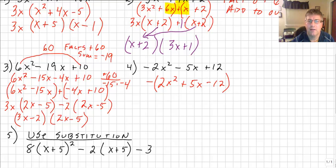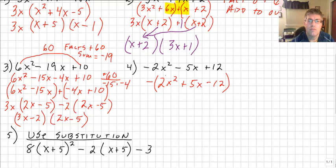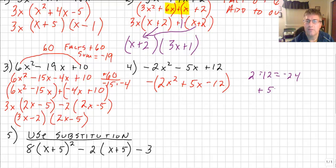We could do guess and check here since the factors of 2x² are just 2x and x, but negative 12 gives choices: 4 and 3, 6 and 2, 12 and 1. So I'm going to factor by grouping. 2 times negative 12 equals negative 24. I need factors of negative 24 whose sum is positive 5.